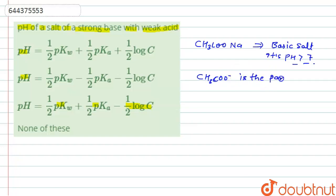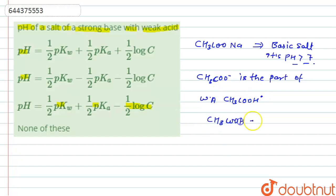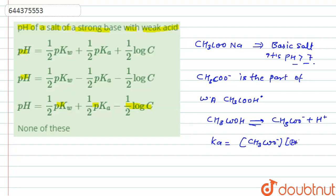CH₃COO⁻ is the part of the weak acid CH₃COOH. CH₃COOH undergoes equilibrium: CH₃COOH ⇌ CH₃COO⁻ + H⁺. So Ka = [CH₃COO⁻][H⁺] / [CH₃COOH], where the concentration of CH₃COOH is given as C.